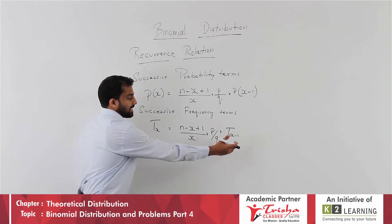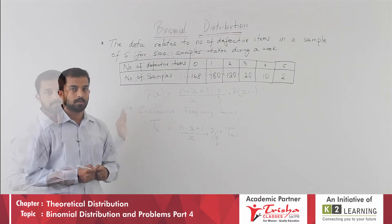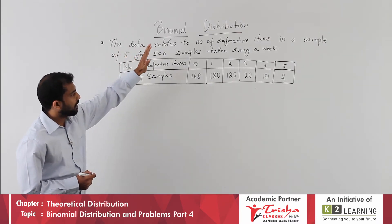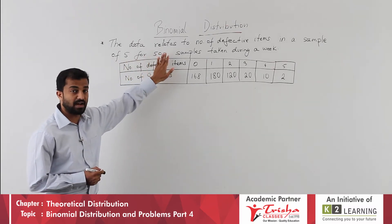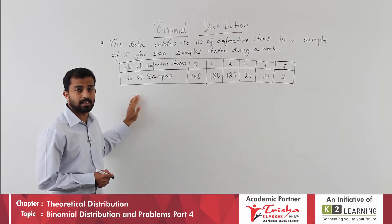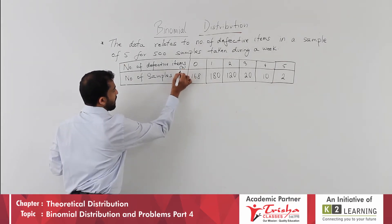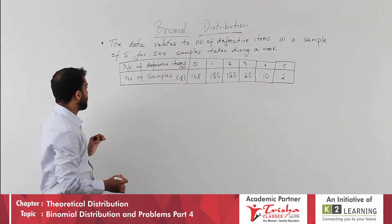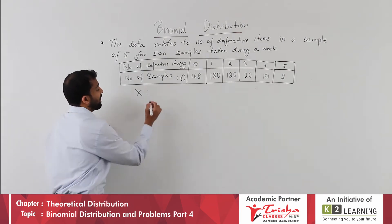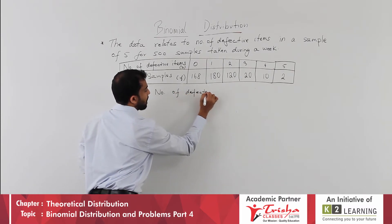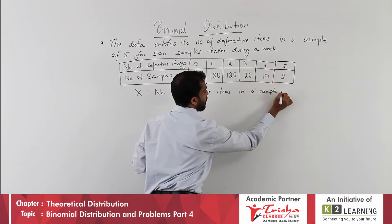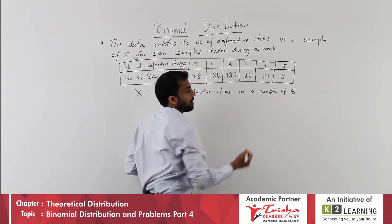Now let us see a problem based on this recurrence relation formula. The data relates to the number of defective items in a sample of 5 for 500 samples taken during a week. The defective items and the number of samples are given. Here x represents the number of defective items in a sample of 5.